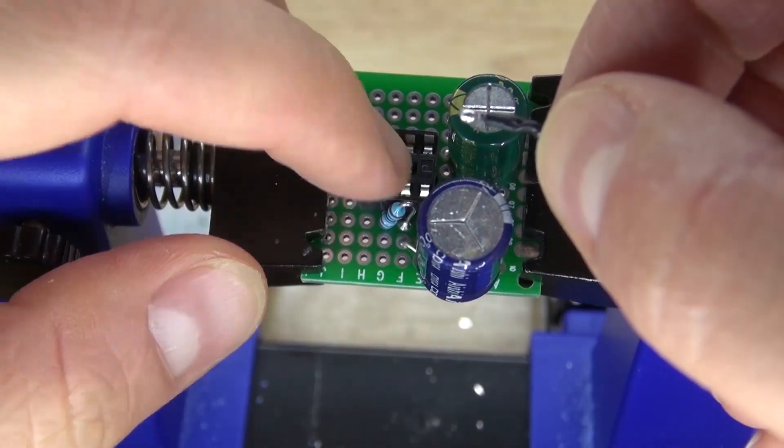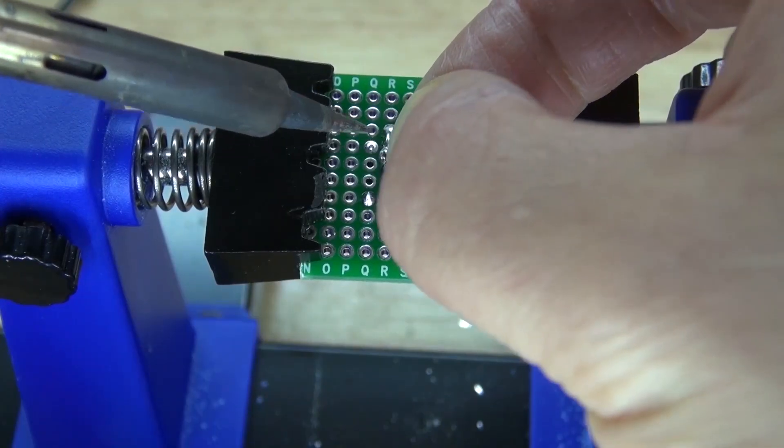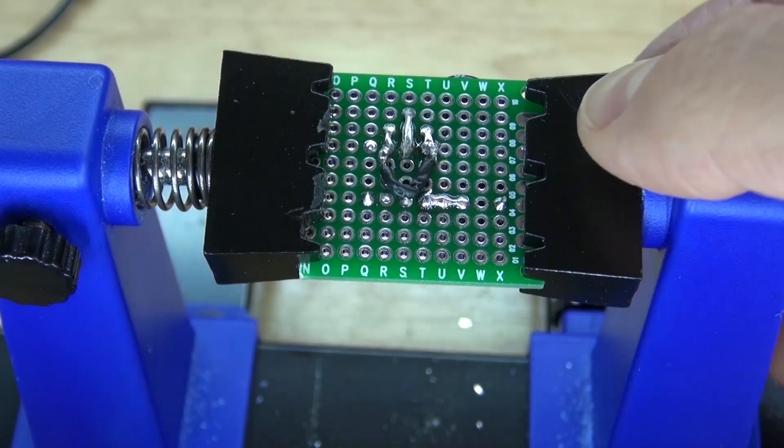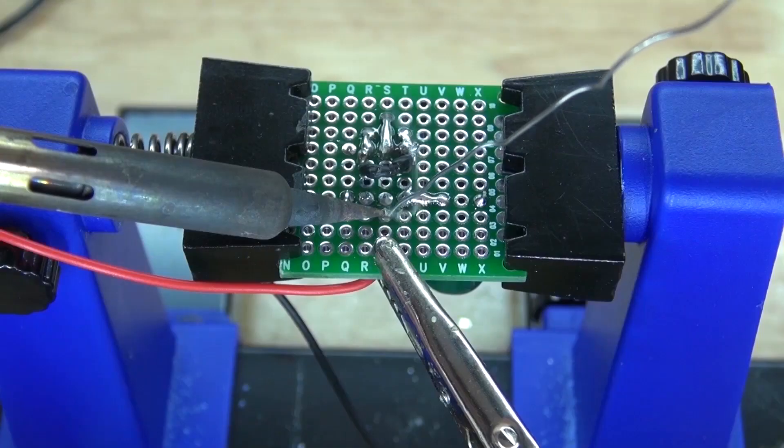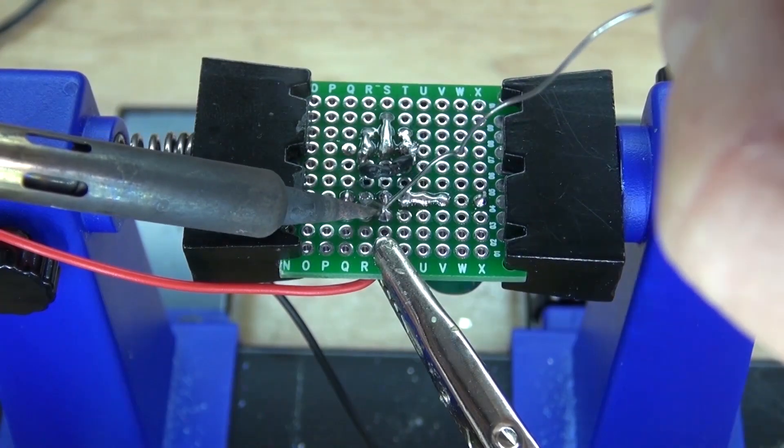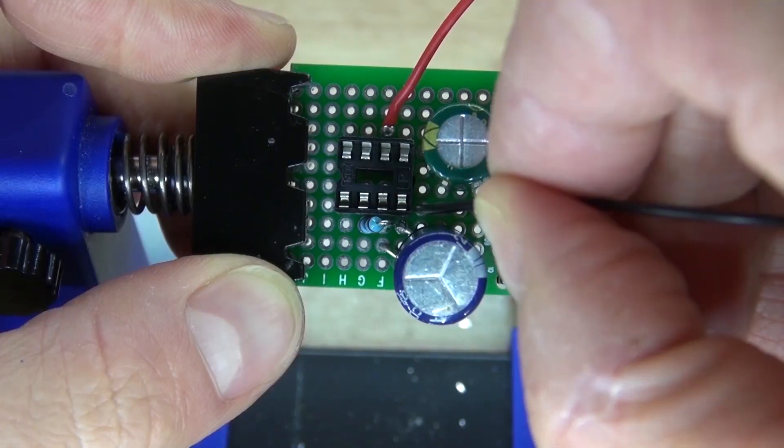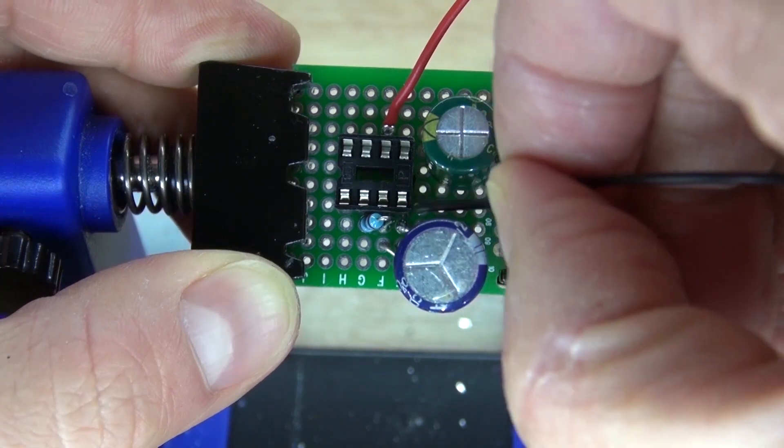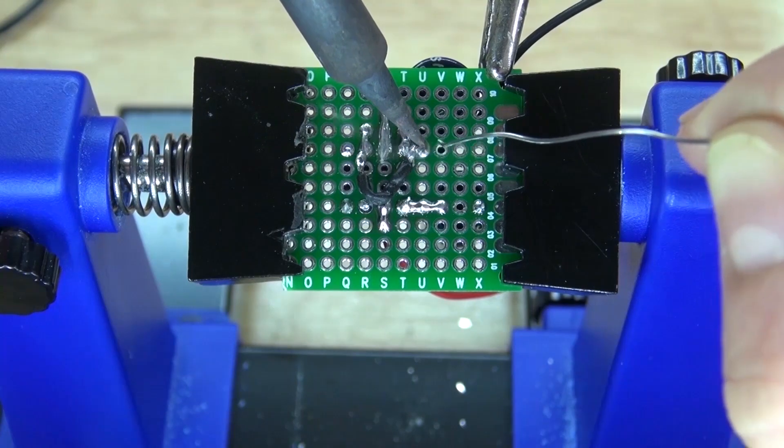Next you're going to need to take your negative wire, solder it to pin 2, and then solder it to pin 4. Take your 9 volt battery connector, connect the positive to pin 6, solder bridge it to 6. Take the negative of the battery clip and connect it to pin 4. Solder it into place.